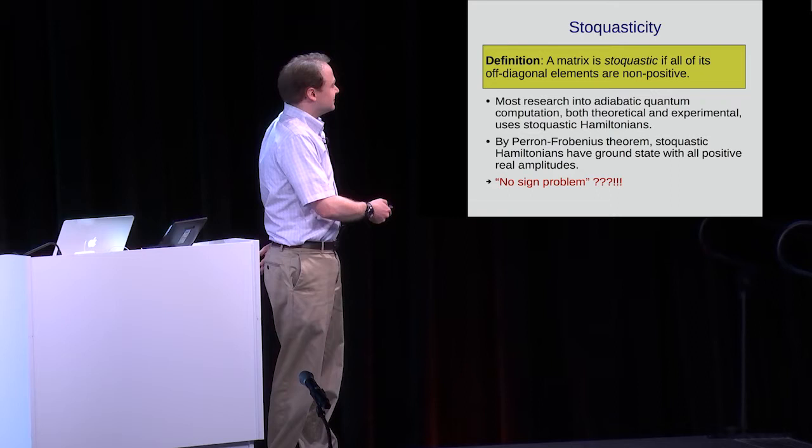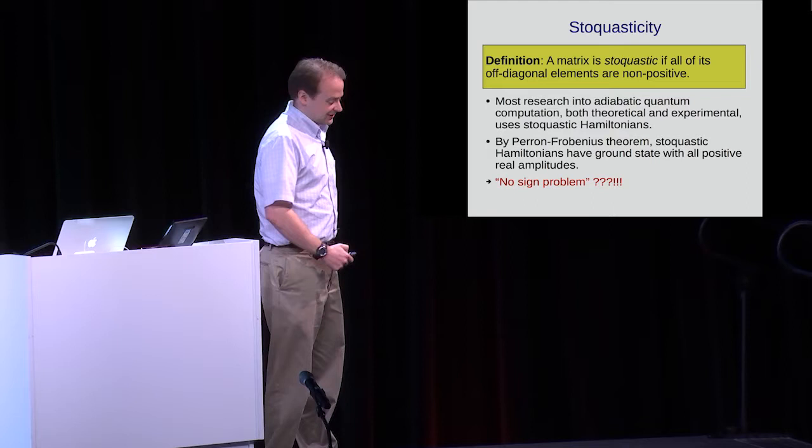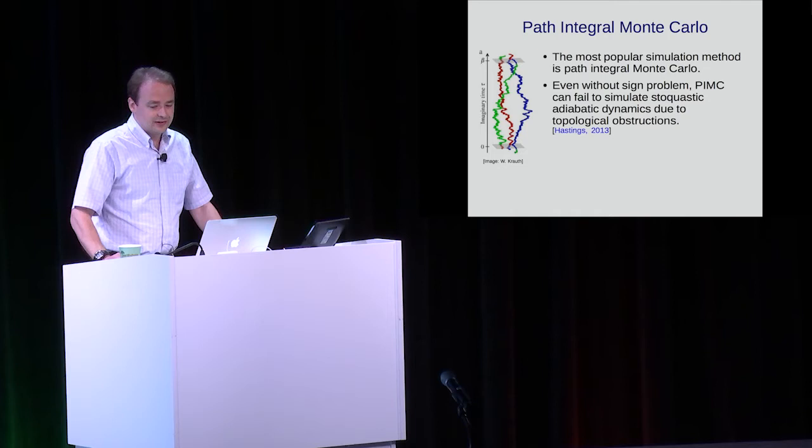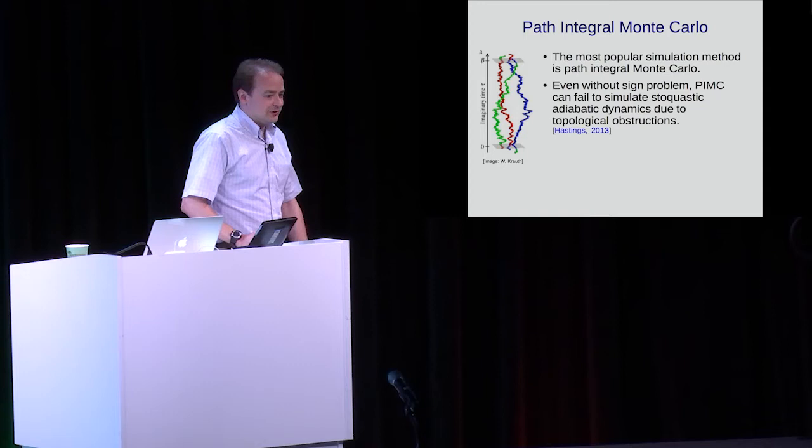I'll approach this from the point of view of asymptotic complexity—what's polynomial, what's exponential—though of course there are more fine-grained questions one could ask about finite-sized instances. So let's look at what these Monte Carlo algorithms for simulating these Hamiltonians actually are.